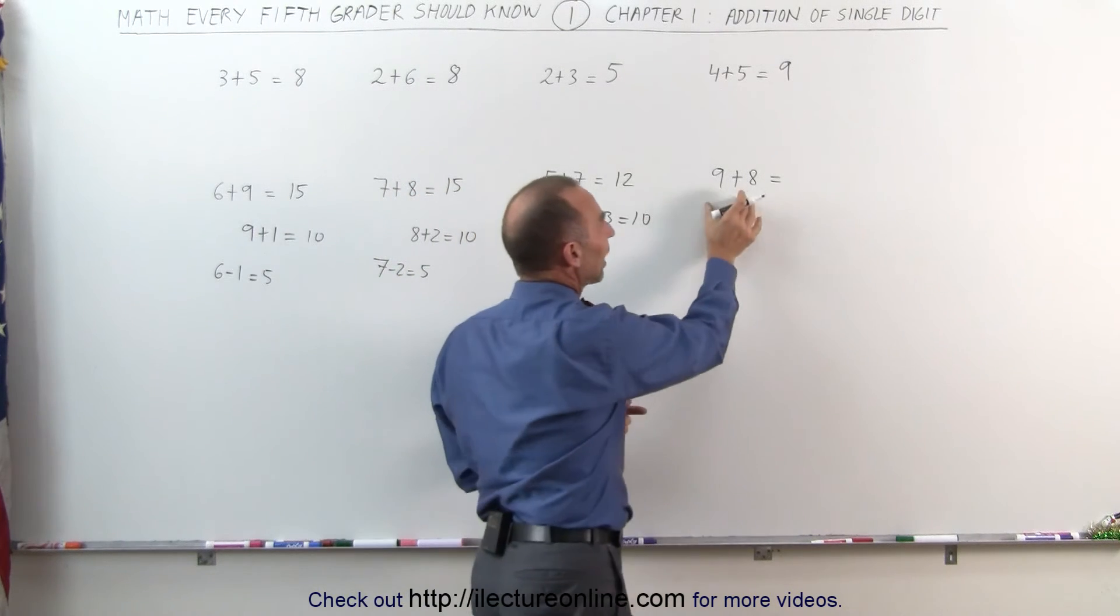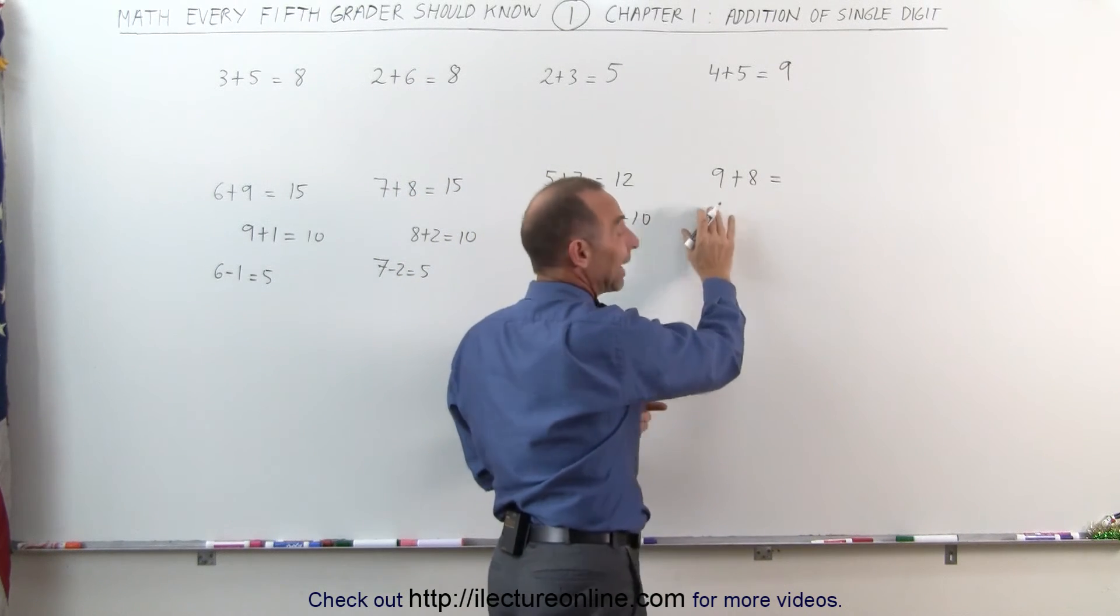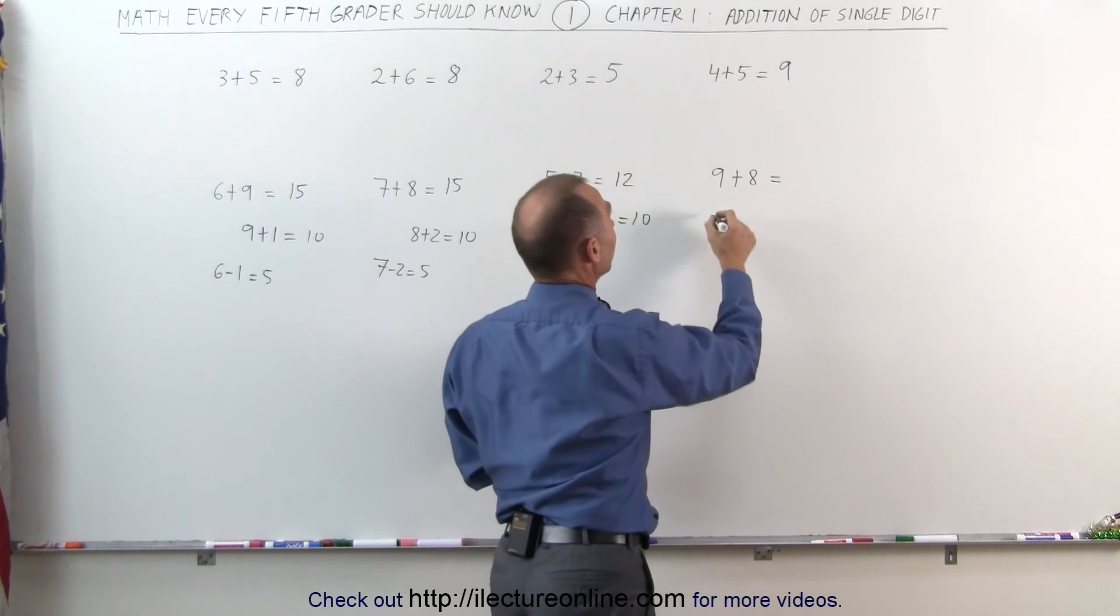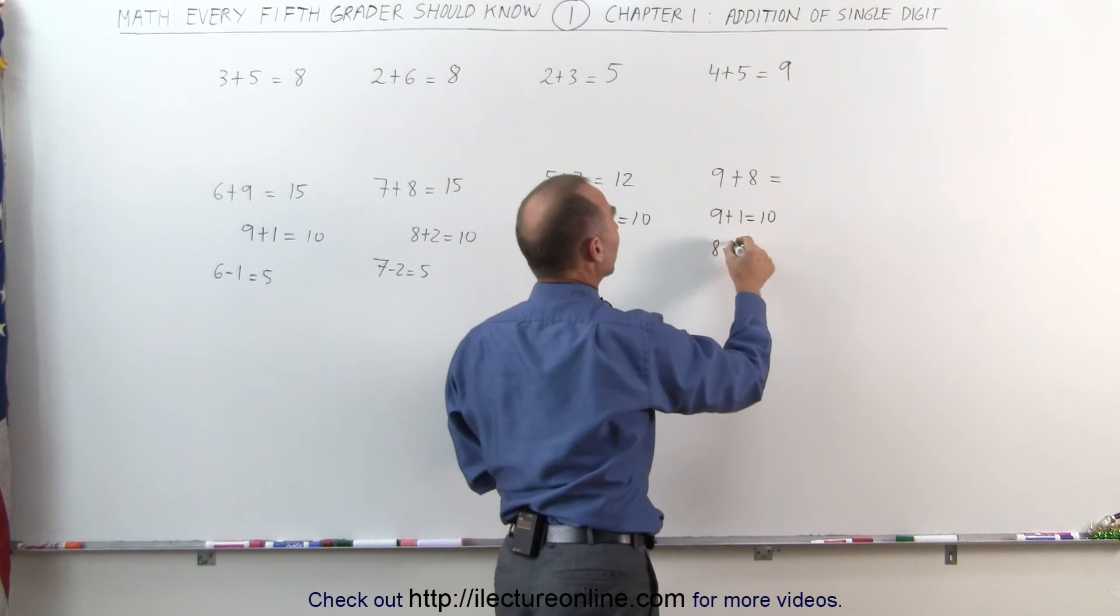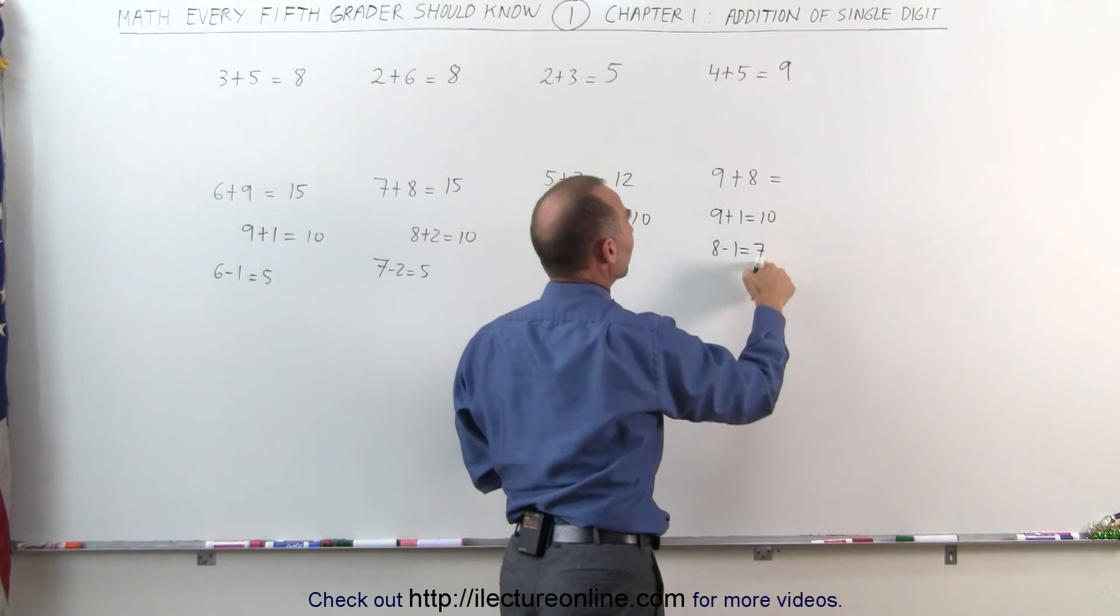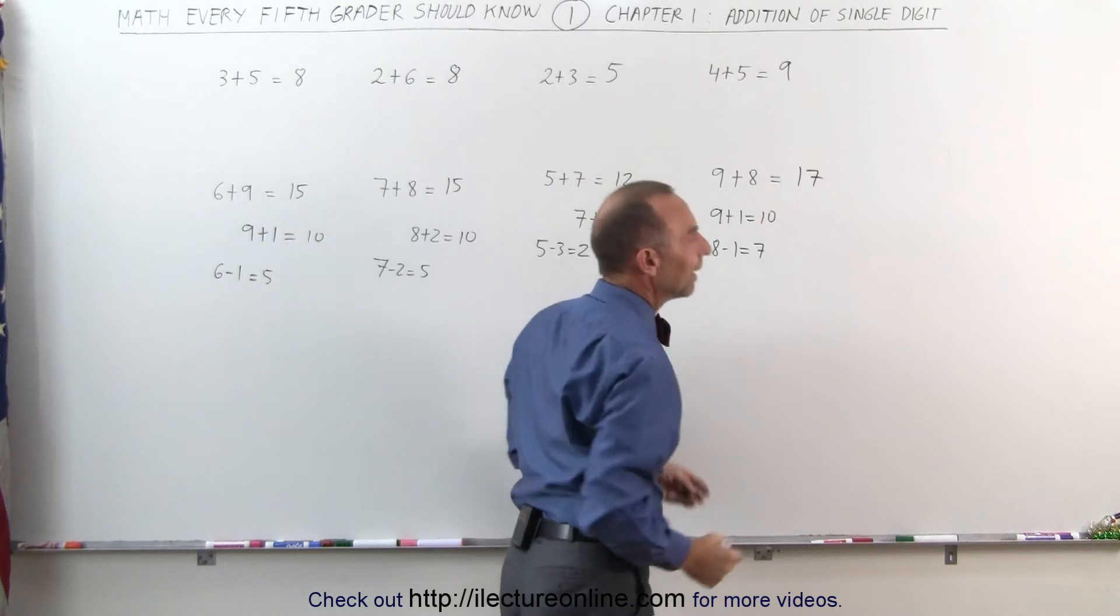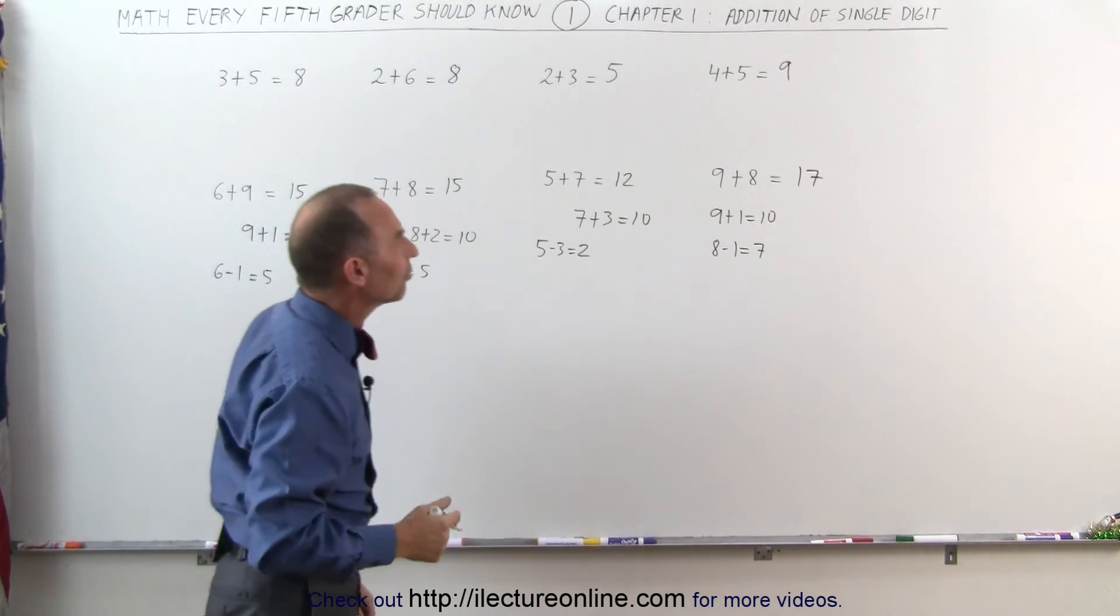And here we have 2 numbers, 9 plus 8, I'll take the bigger number, I need 1 more to make that 10, 9 plus 1 equals 10, I subtract the 1 from the 8, 8 minus 1 gives me 7, 10 plus 7 gives me 17. And that's how we work with numbers in our head.